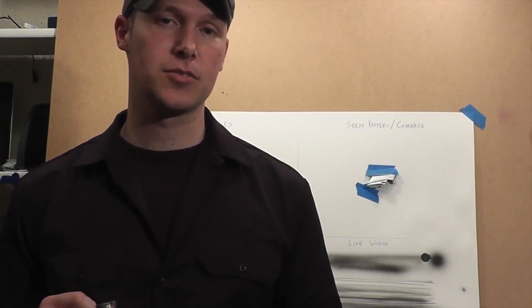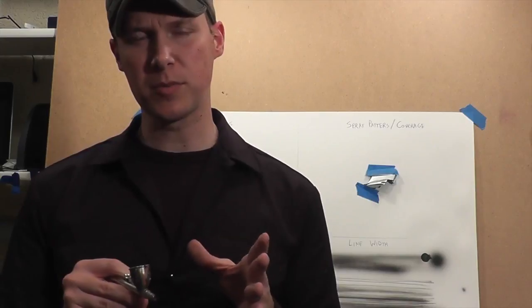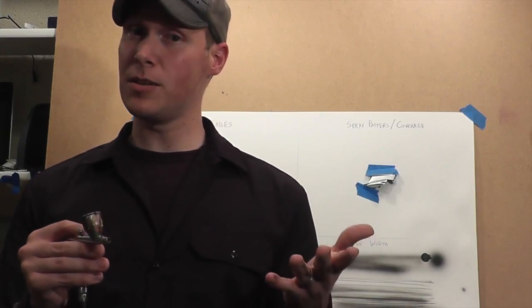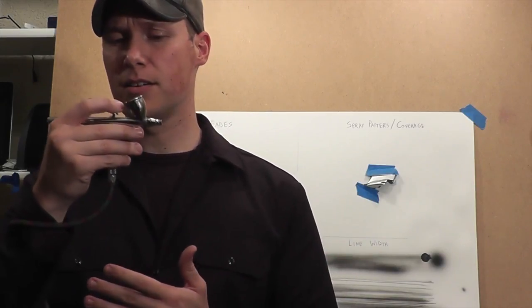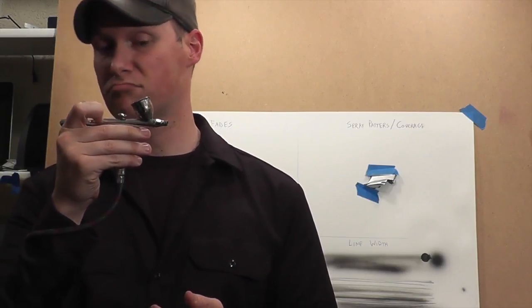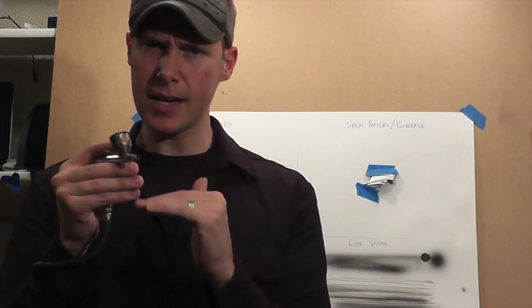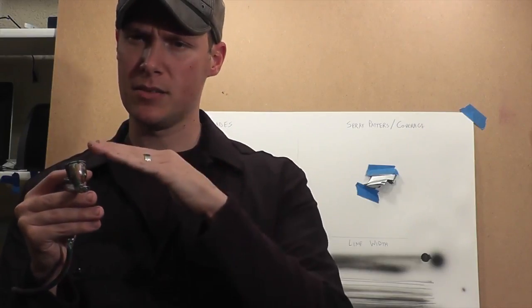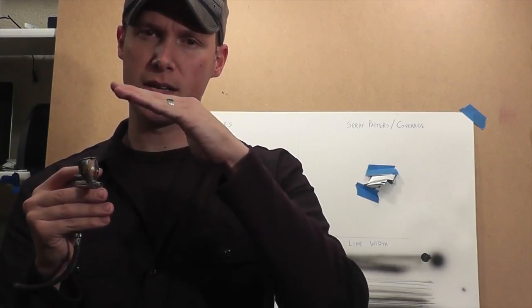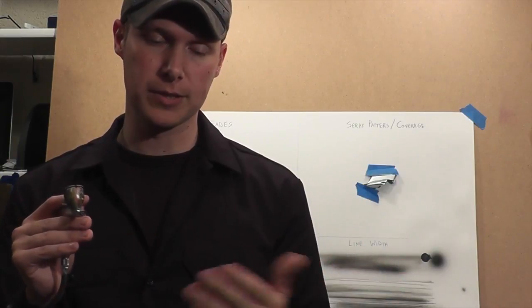So now that we've done dagger strokes and line width, now let's move on to shading. The principle behind shading is line width, line control—same thing. You're going to push down for air, pull back for more paint. You're going to move closer for less paint. The principle behind shading: no big secret, you just learn how to spray less and less paint as you move up, or more and more depending on the way your shadow is going.